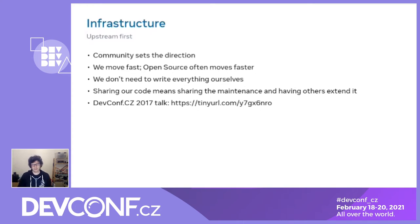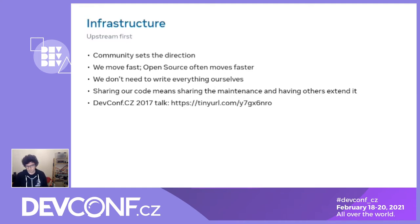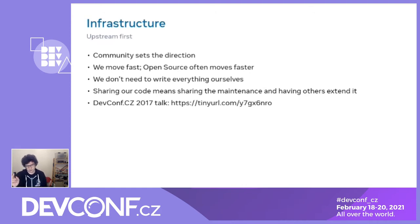We don't need to write everything ourselves, and the fact that we can leverage the community's work means we can also share our work — share our code, share the maintenance, and have other people contribute to it. From an engineering standpoint, it is much more pleasant to know you're working on something that others can actually leverage and use. There's a talk I gave at DEFCON in 2017 that's still fairly relevant if you're interested in our approach here.